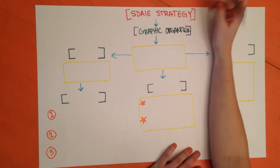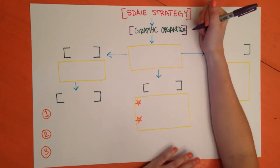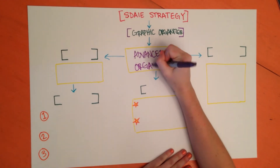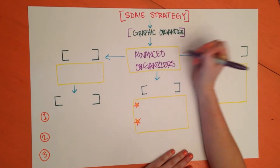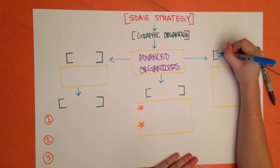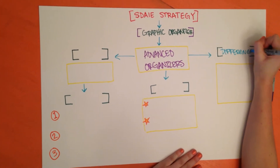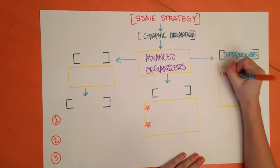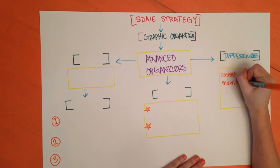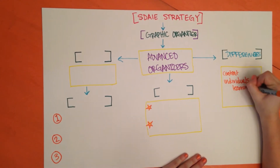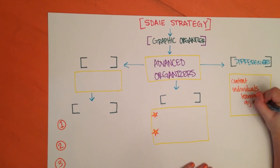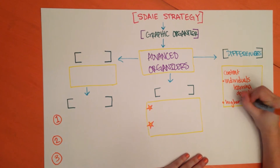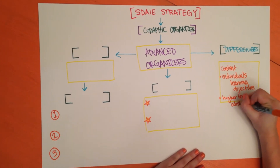Today I want to explain a strategy for working with English language learners. It's a type of graphic organizer called advanced organizers, and these are different from graphic organizers in the content that they tackle. The differences are that they focus more on the content and the individual's learning objectives, as opposed to just illustrating a new concept. They also call for a higher level of abstraction in the student's thinking.